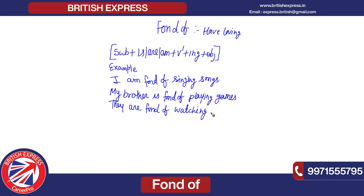Now let me explain the helping verb rule. If I talk about a singular person like 'I', I use 'am'. If I talk about my brother — already a single person — I use 'is'. If I talk about more than one person, I use 'are'. So remember: use 'am' with 'I'; use 'is' with singular names like Rahul, Rohan, my brother, my sister, my father; and use 'are' with plural subjects like they, we, or you.